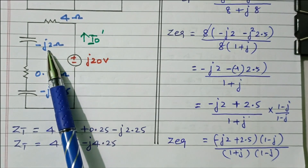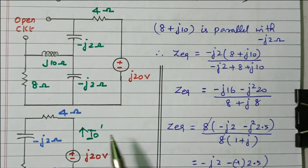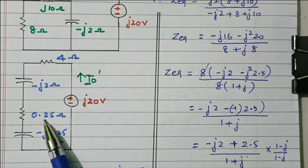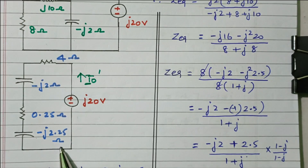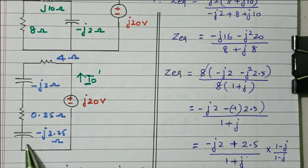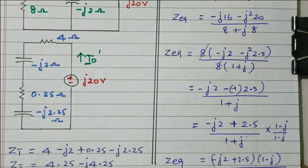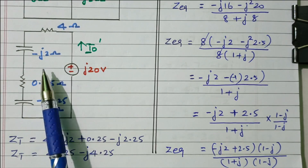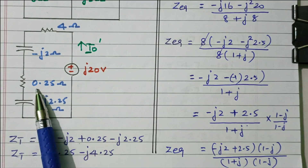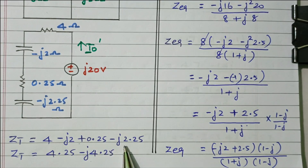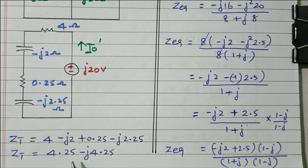The circuit also has a 4 ohm resistor and a −j2 ohm capacitor already in the loop. The entire parallel combination is now simplified to 0.25 − j2.25 ohm. With a single loop, the total impedance Z_T equals 4 − j2 plus 0.25 − j2.25, giving Z_T = 4.25 − j4.25 ohm.